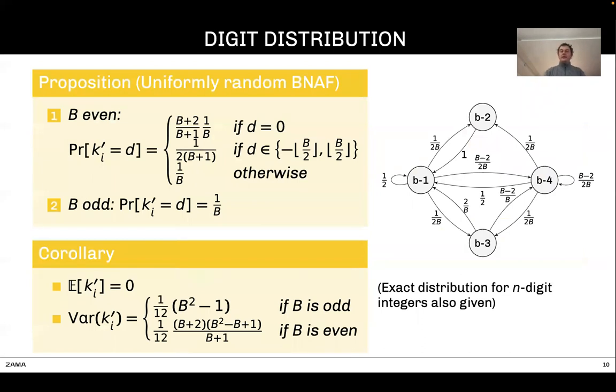We also studied the distribution of the digits. Assume you have a uniformly random BNAF. If you take one digit k' in that sequence of digits, it will satisfy that distribution. Digit zero has an occurrence probability that is higher. Digit B/2 or minus B/2 has a lower occurrence probability. All the other digits have a probability of 1/B to occur. When the radix is odd, all digits are equiprobable.